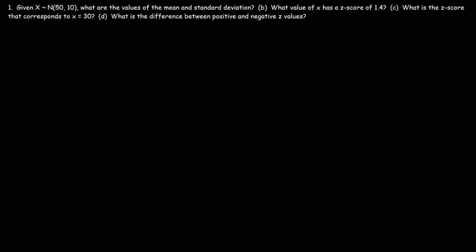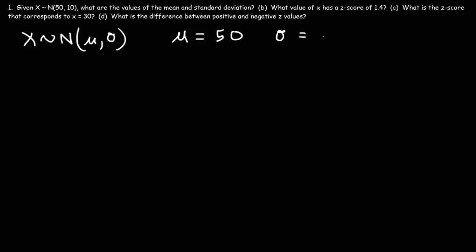Here's the first example problem. Feel free to pause the video to try it yourself. Given X ~ N(50, 10), what are the values of the mean and standard deviation? The first number corresponds to the mean and the second to the standard deviation. So the mean is 50 and the standard deviation is 10.